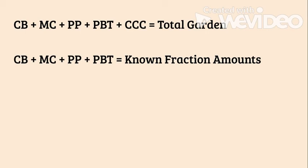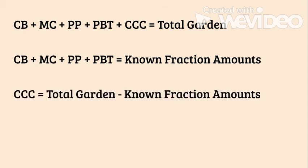So before I can find out cotton candy carrots, I need to think about the total garden minus those known fractional amounts. And before I can subtract those known fraction amounts from the total garden, I need to add all those together.